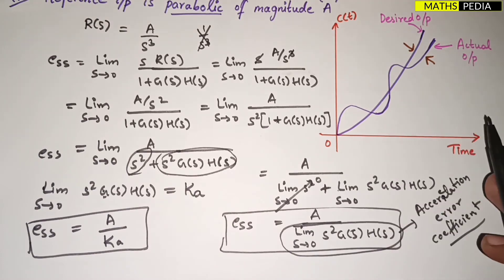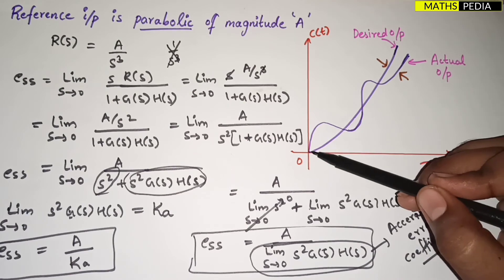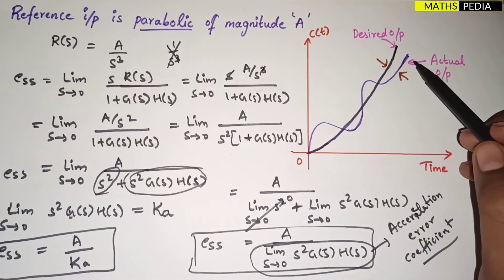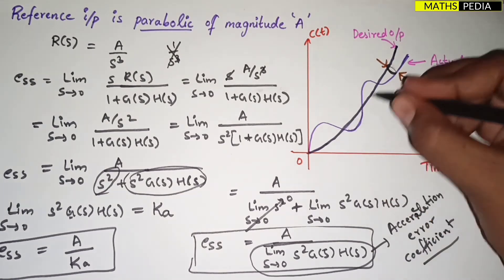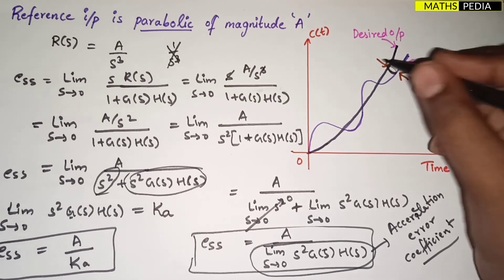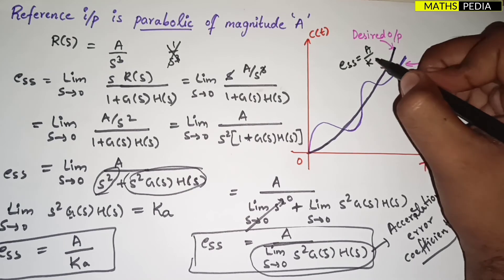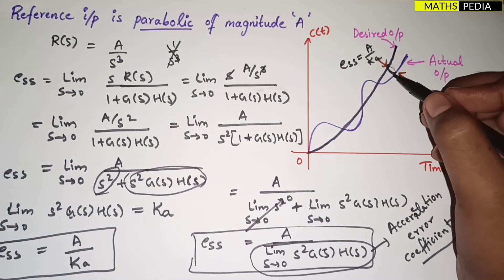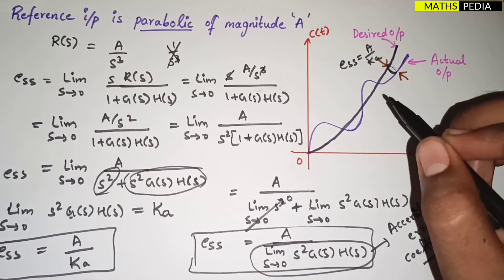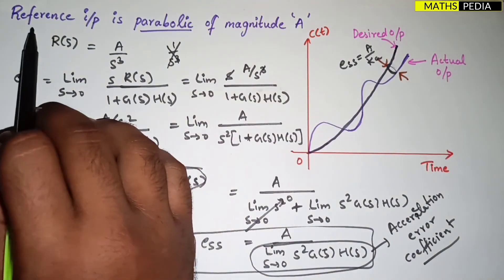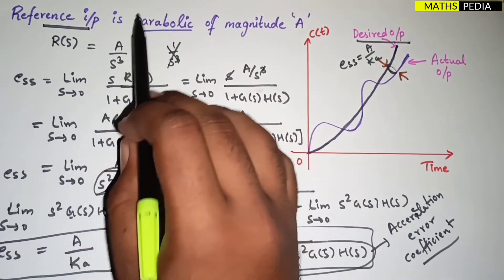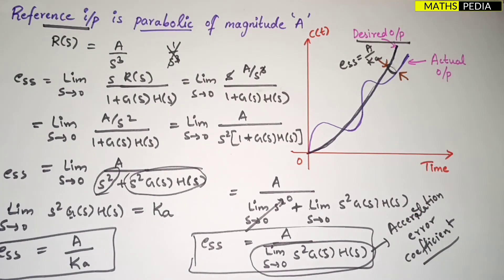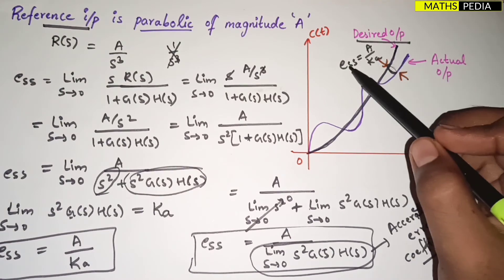Looking at the parabolic graph, the desired output is parabolic, but the actual output has some error — you can see the space between the two curves. You should be getting the desired path but you're not, because of some error. That steady state error is given by e_ss = a/Ka since the reference input is parabolic.